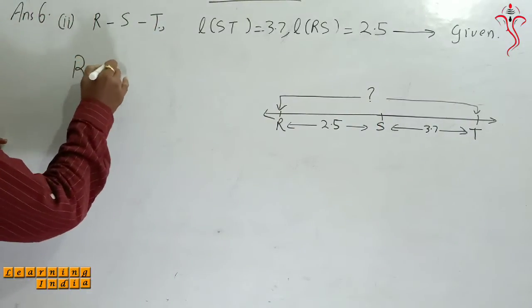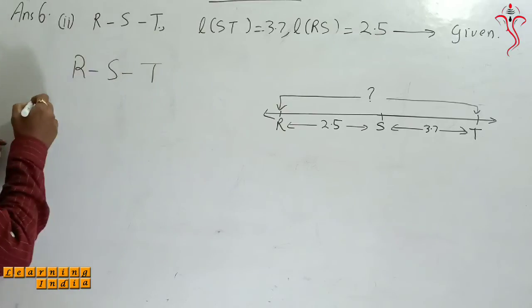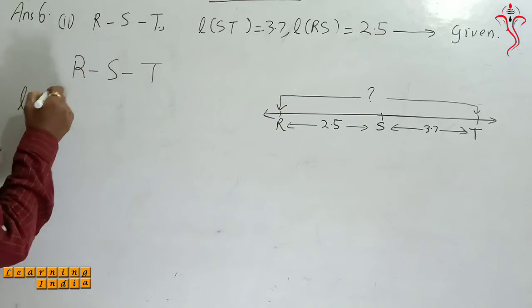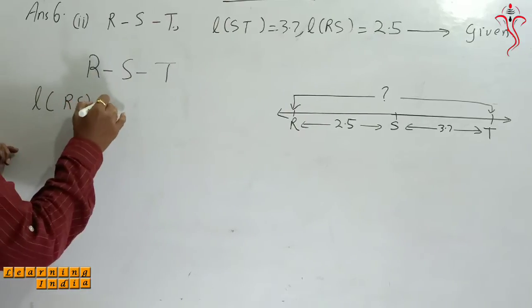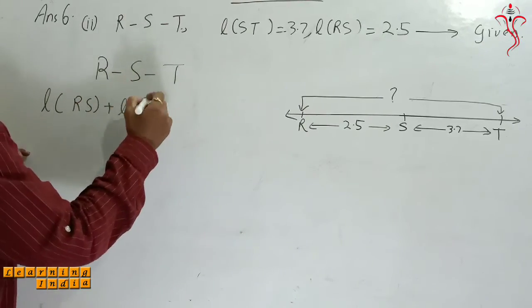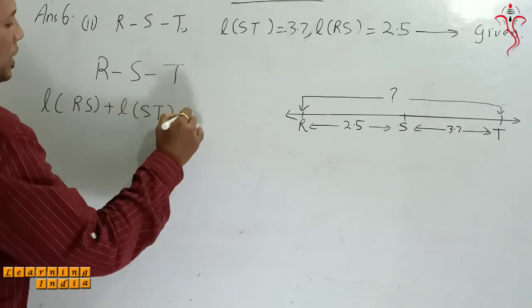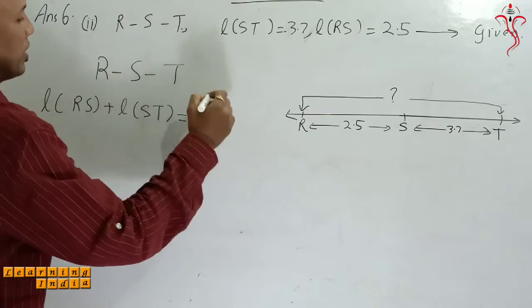R-S-T is given, so what is that? RS plus length ST is equal to length RT.